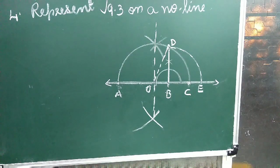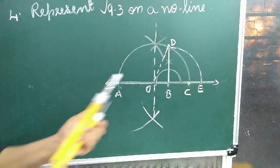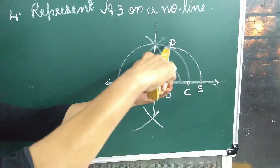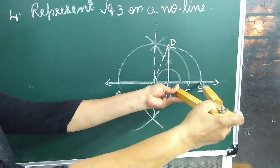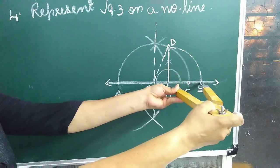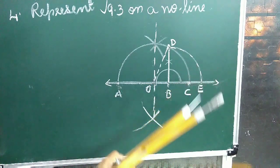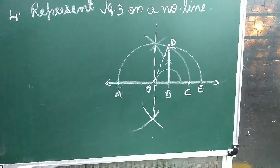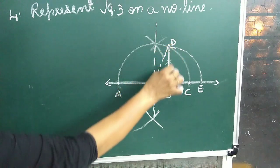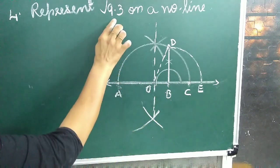With B as center and BD as radius, draw another arc which intersects the number line at E. This point E represents root 9.3. That is, BD equals BE equals root 9.3 cm.